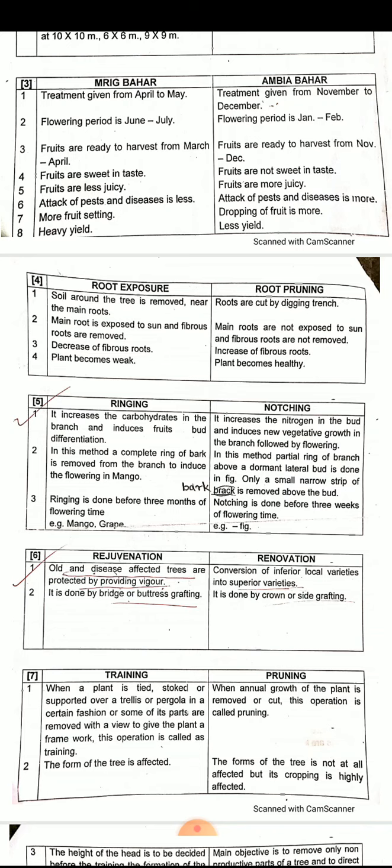The next difference is rejuvenation and renovation — this is new in 12th standard. Rejuvenation means conversion of old, disease-affected, or unproductive trees into productive trees. In rejuvenation, old and disease-affected trees are restored by providing vigor.